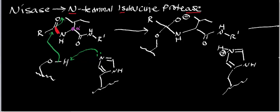Because this is a serine protease, remember we also have an aspartate in the active site with a negative charge. That aspartate is in an electrostatic interaction with a proton on the histidine, which has a partial positive charge. The aspartate interacts with the histidine, holding it in an orientation that allows deprotonation of the serine.